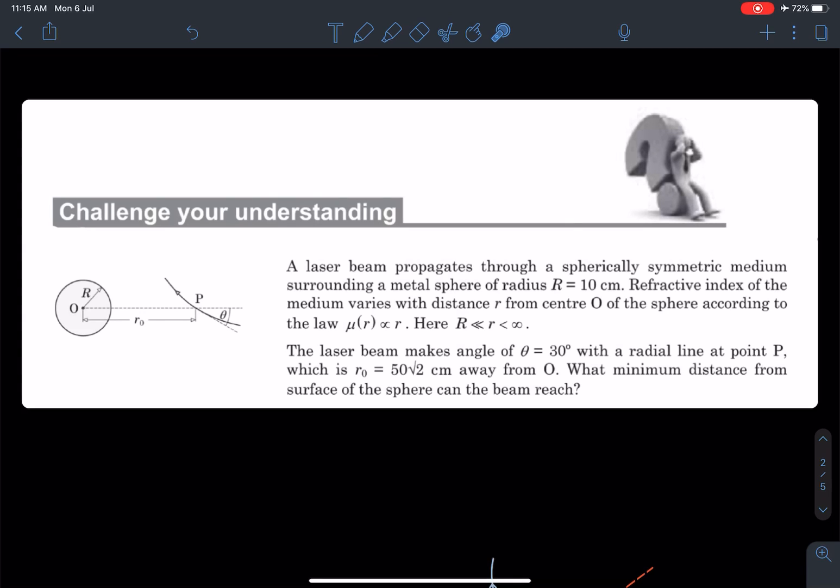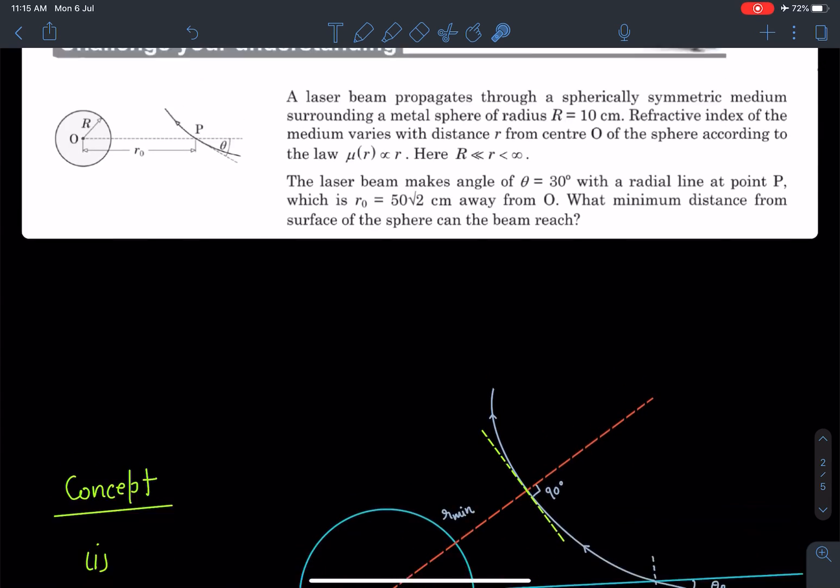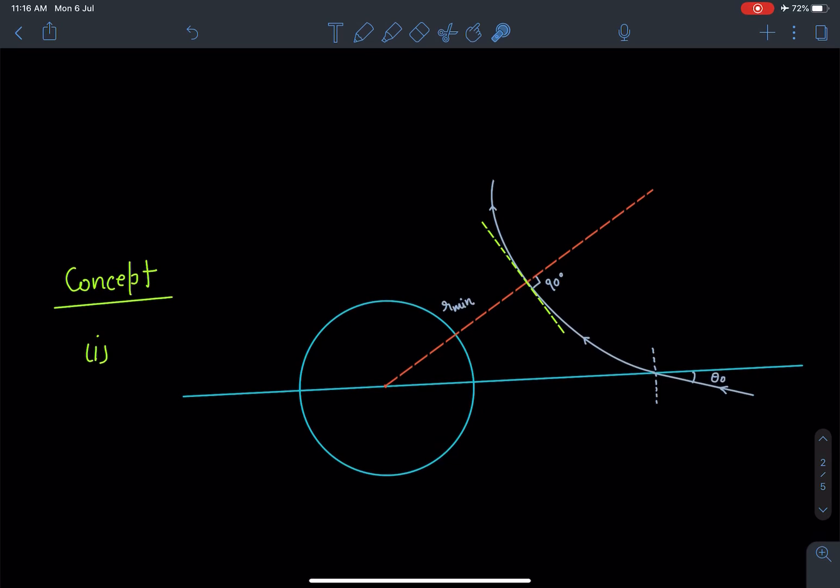Let's proceed with the concept part. I'll suggest we need a rough diagram because we don't know how this path is going to be. As this light ray enters at angle θ₀ into the problem, the ray will follow a random path we don't know, but we can definitely say that when this distance is minimum, the light ray is going to take a turn.